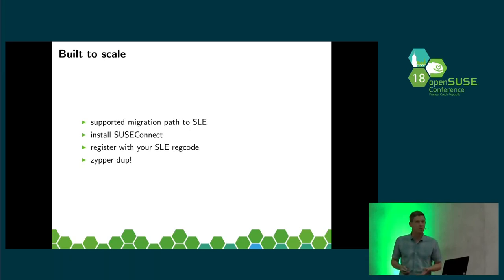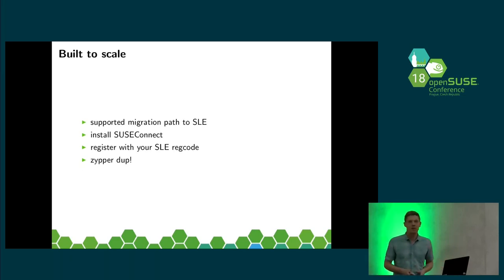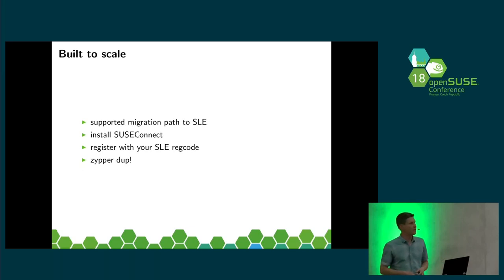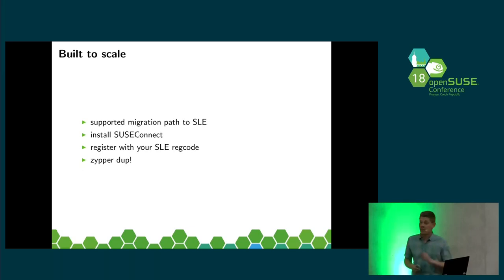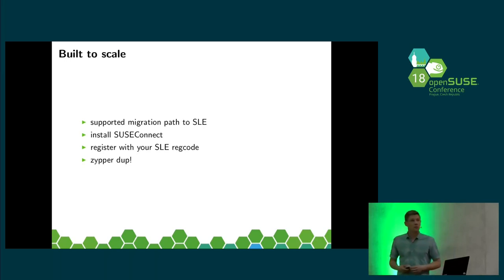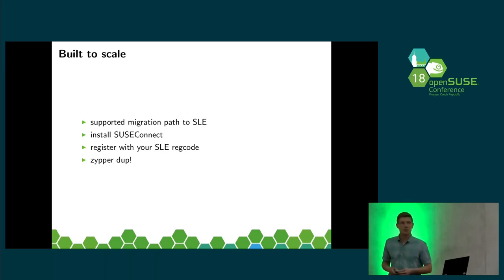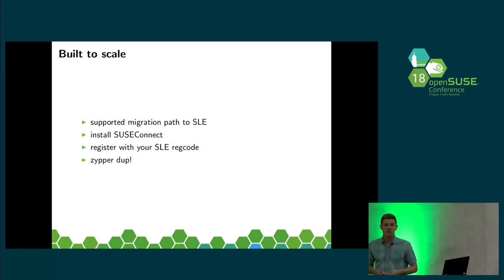Of course, there's a footnote: Leap has 11,000 packages and SLES only 3,000. So that will only work if you have the package set from SLES, which means the server installation. However, that's not the end because there's the Package Hub. If you have a package in Leap that you miss in SLES, you can submit it to the SUSE Linux Package Hub and then the package is also available for SLES without invalidating your support or subscription.